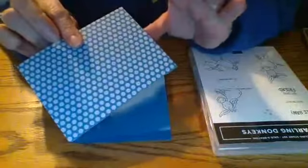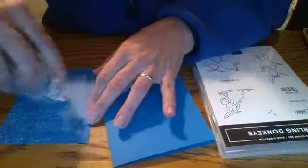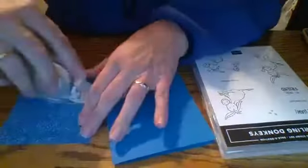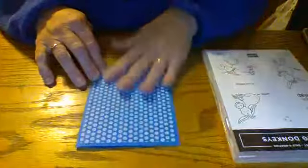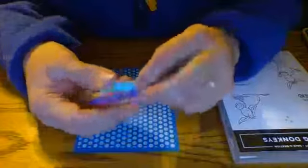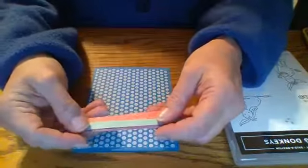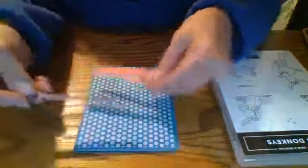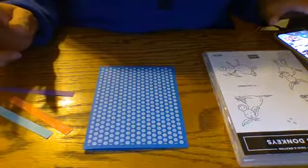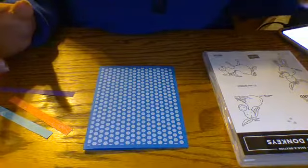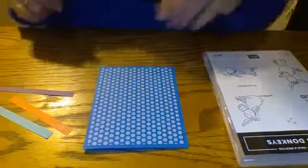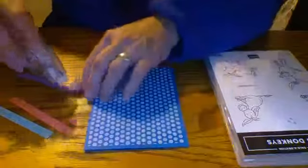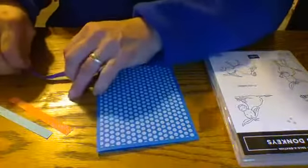Then we will be taking from our designer series paper. This is from the brights collection. So we're just going to attach that down and I'm using our stamp and seal plus. And this is one of my favorite glues. It just really, really holds nice. So we have that.